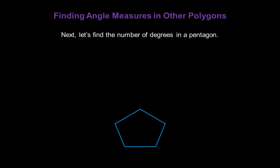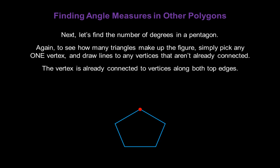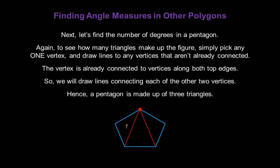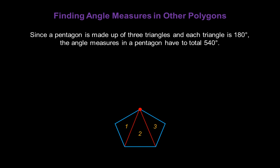Next, let's find the number of degrees in a pentagon. Pick the vertex at the very top and draw lines to any vertices not already connected to it. The vertex is already connected along both top edges, so we draw lines to each of the other two vertices, creating three triangles. Since a pentagon is made up of three triangles and each triangle is 180 degrees, the angle measures in a pentagon total 540 degrees.